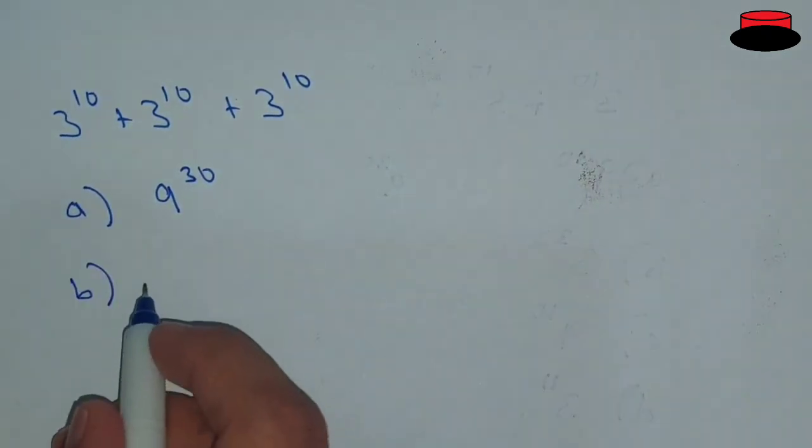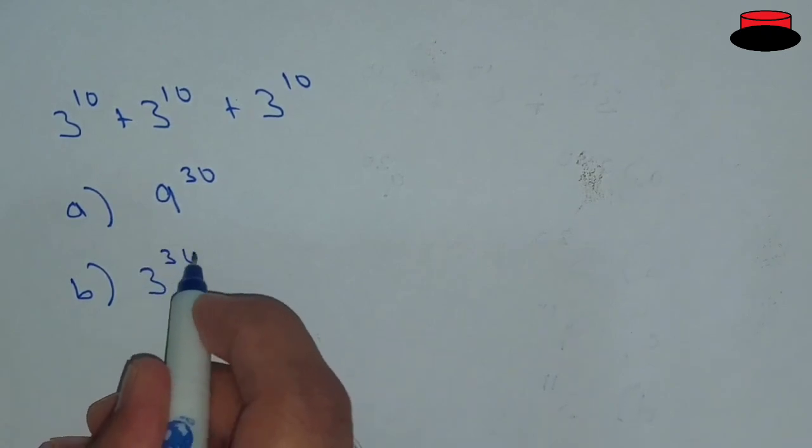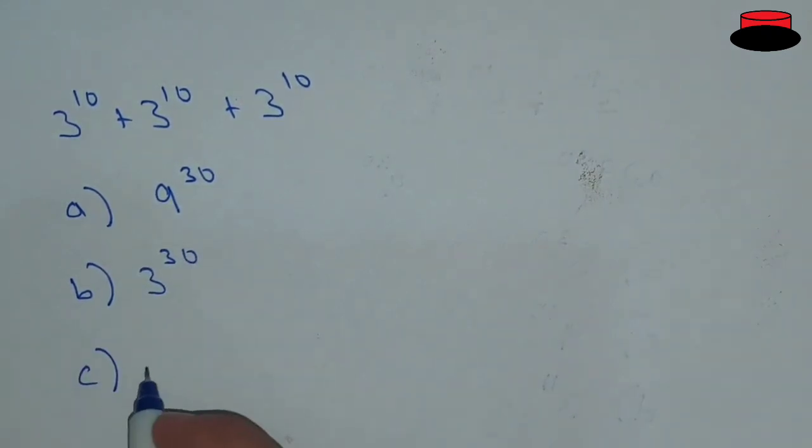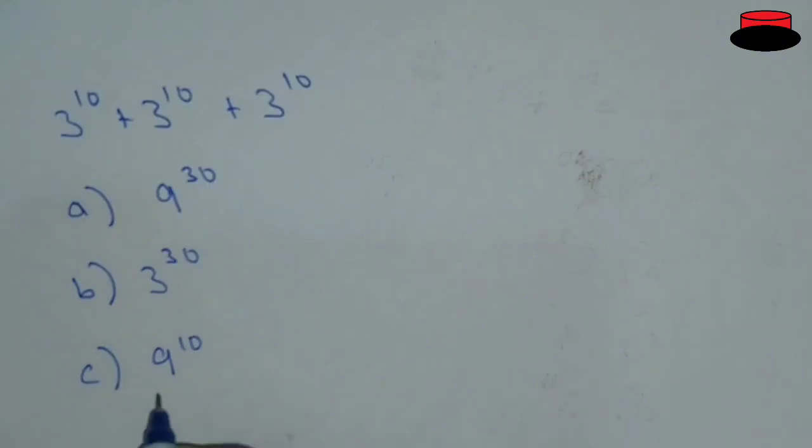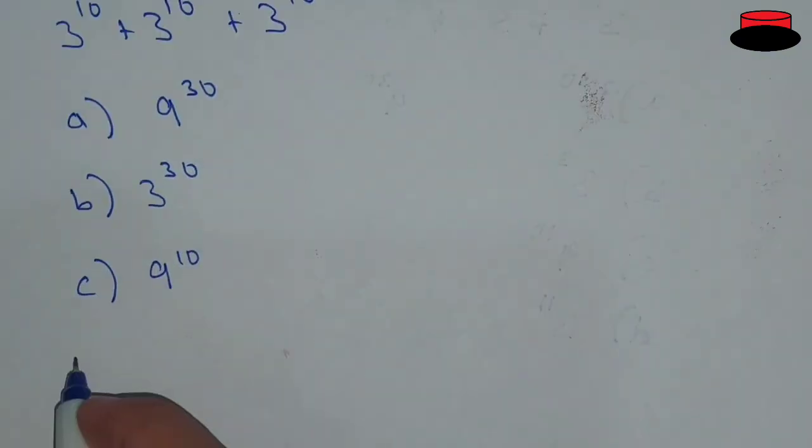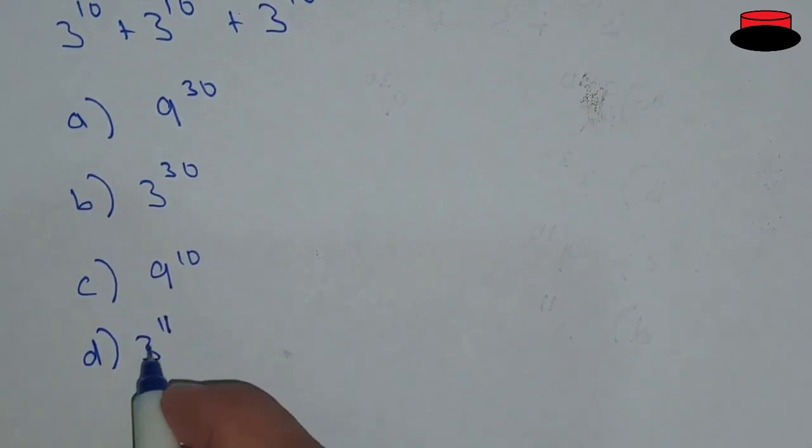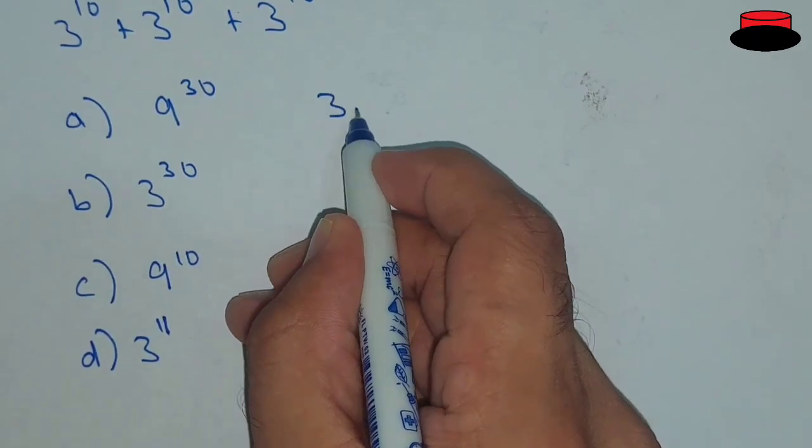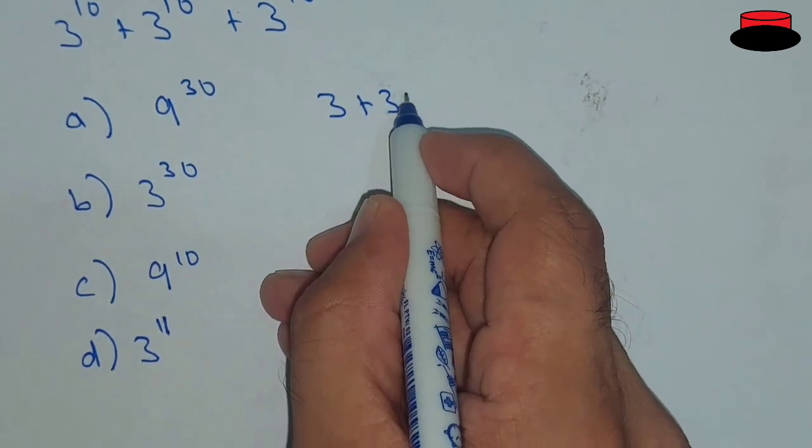Option A is 9^30, option B is 3^30, option C is 9^10, and option D is 3^11. We have to find the answer from these four options.